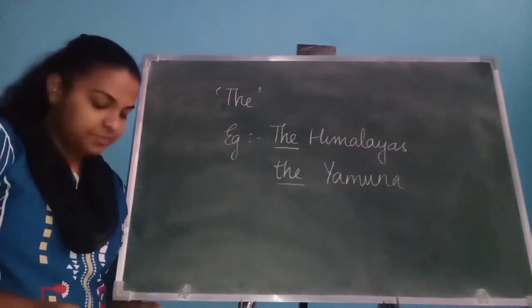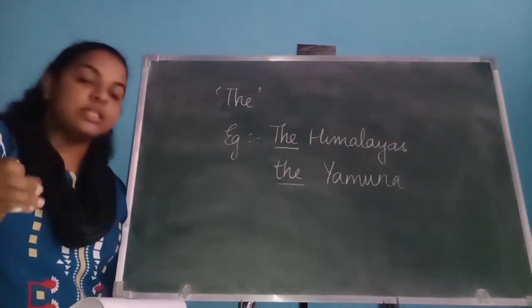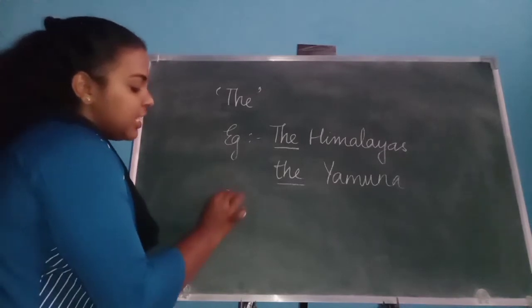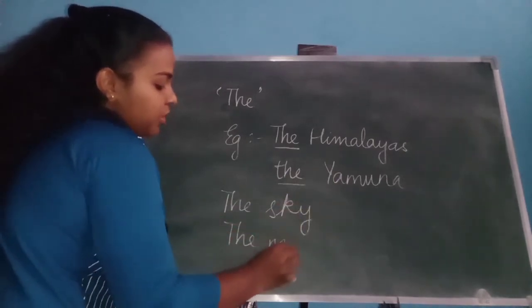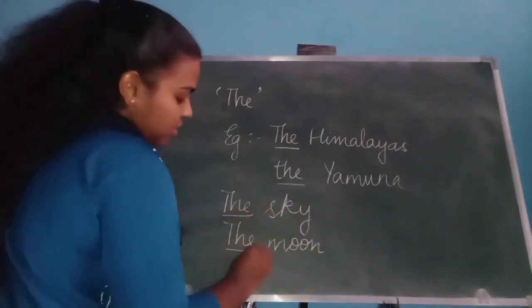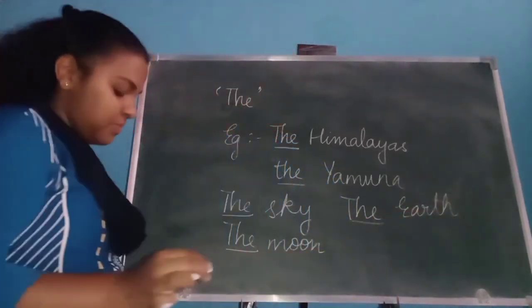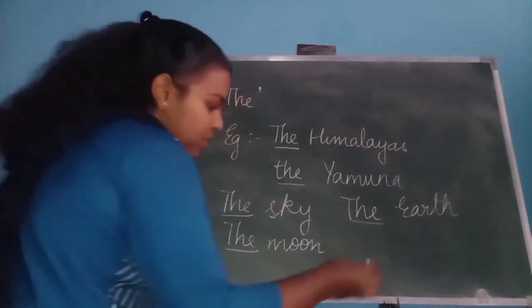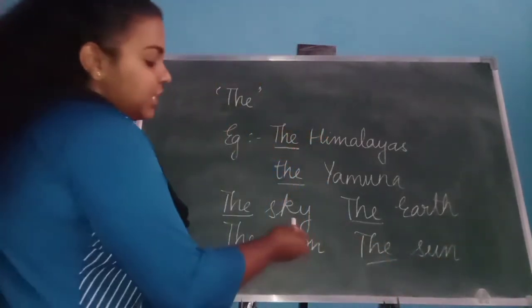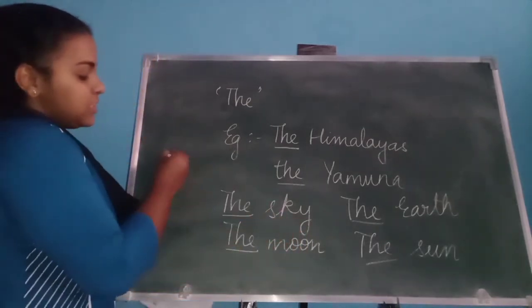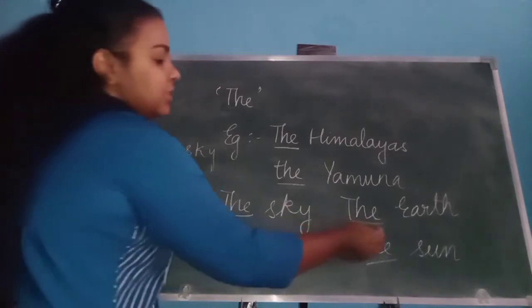Next, we use the with words like the sun, the moon, the earth, and the sky. The things which are there in the atmosphere — like the sky, the moon, the earth, the sun — in front of these words also we are using the. We never use a sky — that is wrong. We always use the sky, the moon, the earth, the sun.